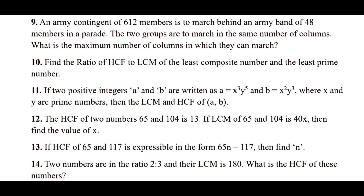Question 9: an army contingent of 612 members is to march behind an army band of 48 members in a parade. Both groups must march in the same number of columns. What is the maximum number of columns in which they can march? To find the maximum number, find the HCF of 612 and 48. The HCF is 12, so the answer is 12 columns.